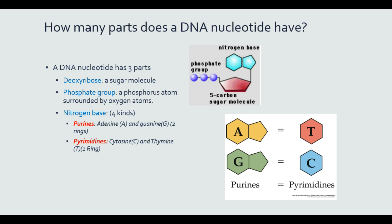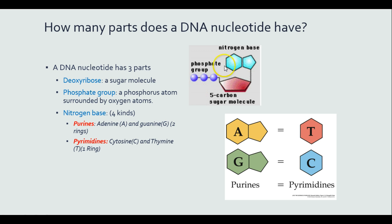We just went over the 3 parts of a nucleotide. Let's get a little bit more specific with the parts. We have deoxyribose, which is the 5-carbon sugar. We have our phosphate groups, just like the phosphate groups in our ATPs, and we have the nitrogen bases.